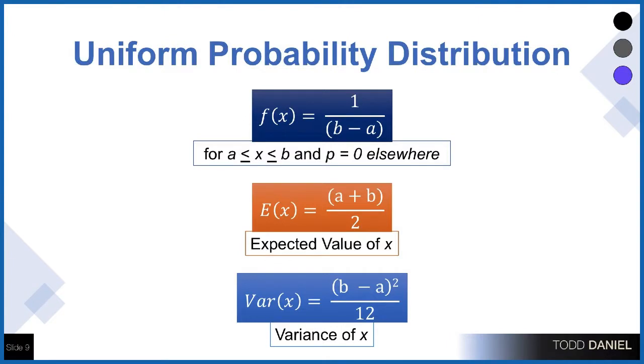These are the formulas that we'll be using. The first is the formula for the distribution. It's one over b minus a. The second is the formula for the expected value, which is the mean of a probability distribution. And the third is the formula for the variance. You can take the square root of the variance and still get the standard deviation.